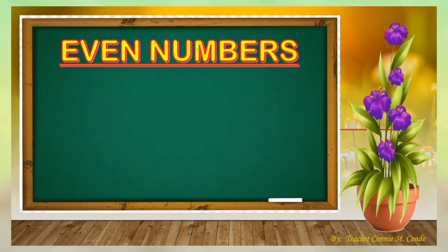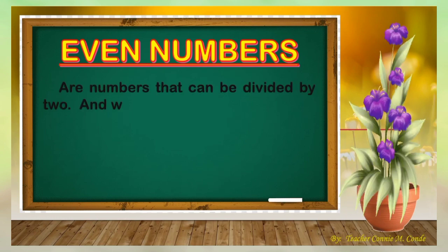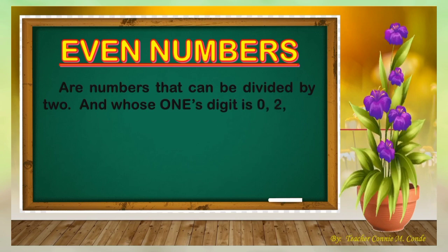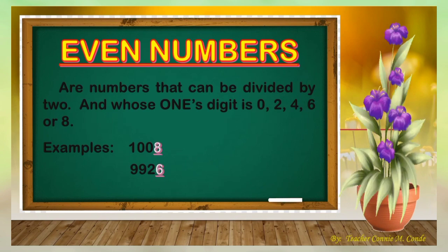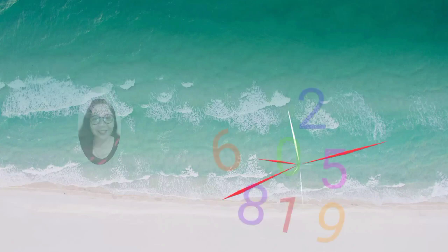Even numbers are numbers that can be divided by 2 and whose ones digit is 0, 2, 4, 6, or 8. Here are some examples of even numbers: 1008, 9926, 1020, 724, and 182.